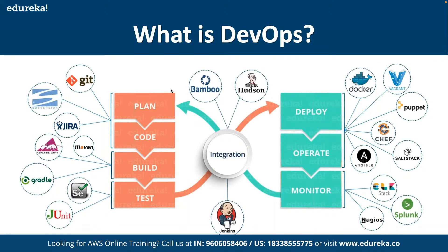After planning, we move to the coding phase, where we need continuous version control using Git, so we can track changes and revert to previous versions when required. Then we move to the building phase, where we use tools like Maven and Gradle to ensure a continuous build setup, so whenever the application is ready we can create a build artifact and push it to the staging server.